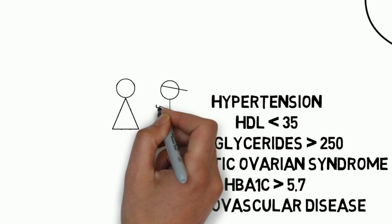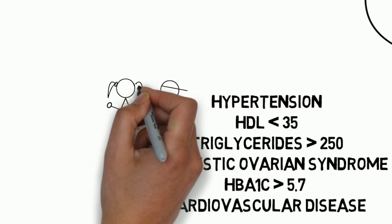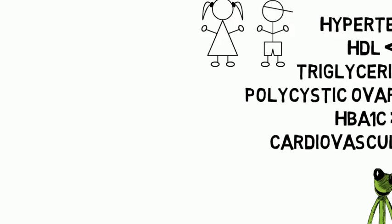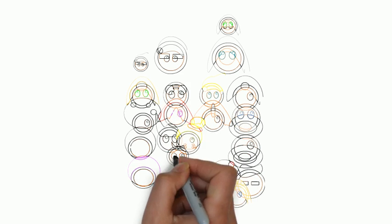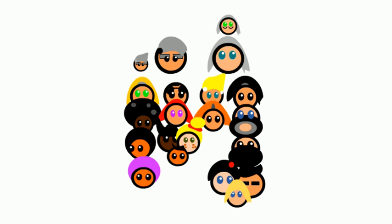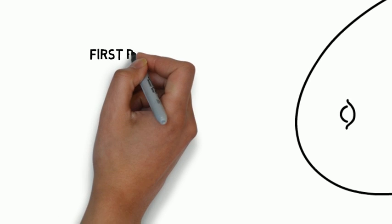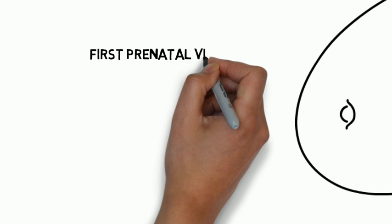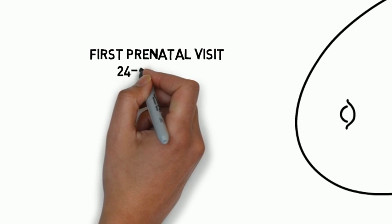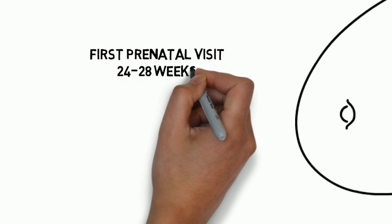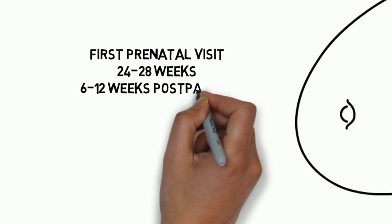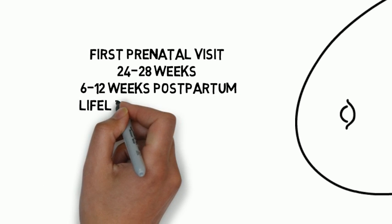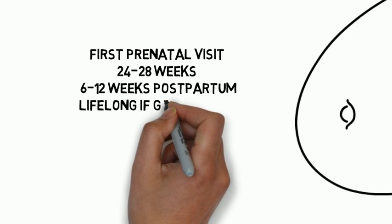Repeat testing should be done at least every 3 years. Children and adolescents should have 2 or more additional risk factors in addition to being overweight to be screened. Relatives of those with type 1 diabetes should undergo antibody testing for risk assessment. Women should be screened at the first prenatal visit, at 24 to 28 weeks of gestation using a 75-gram 2-hour oral glucose tolerance test, and at 6 to 12 weeks postpartum, with lifelong screening for those with a history of gestational diabetes.